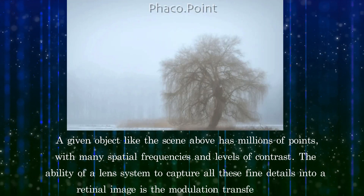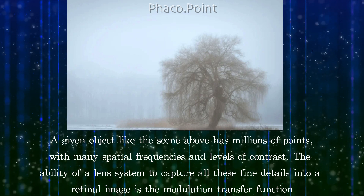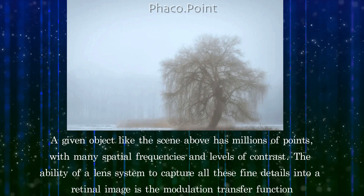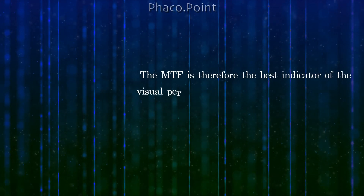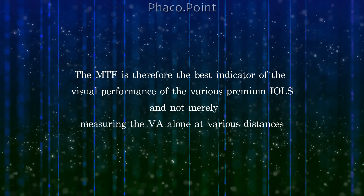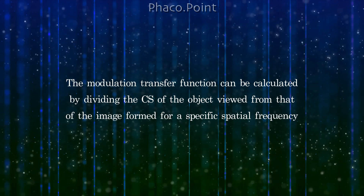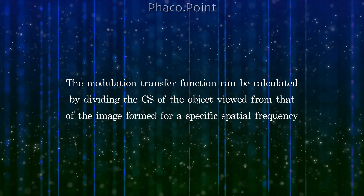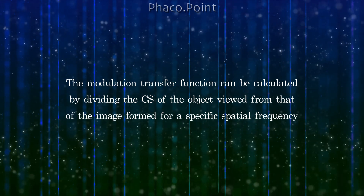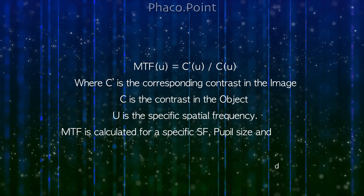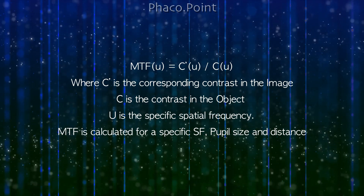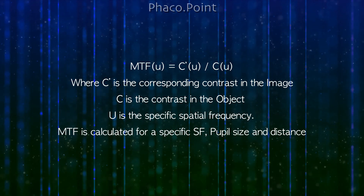A given object has millions of points with many spatial frequencies and levels of contrast. The ability of the lens system to capture all these fine details into the retinal image is called the modulation transfer function, and hence it depicts visual quality. The MTF is therefore the best indicator of the visual performance of premium IOLs, and not merely measuring visual acuity at various distances. The modulation transfer function is calculated by dividing the contrast sensitivity of points in the object viewed by that of the contrast sensitivity in the image formed for a specific spatial frequency. MTF is calculated for a specific spatial frequency, pupil size, and distance.